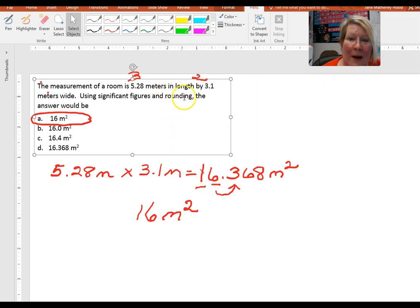Now here comes the rounding part. We have to look at one number past the number of significant figures, and since that number is a 3, which is less than 5, we leave this at a 6. So our final answer is 16 meters squared.